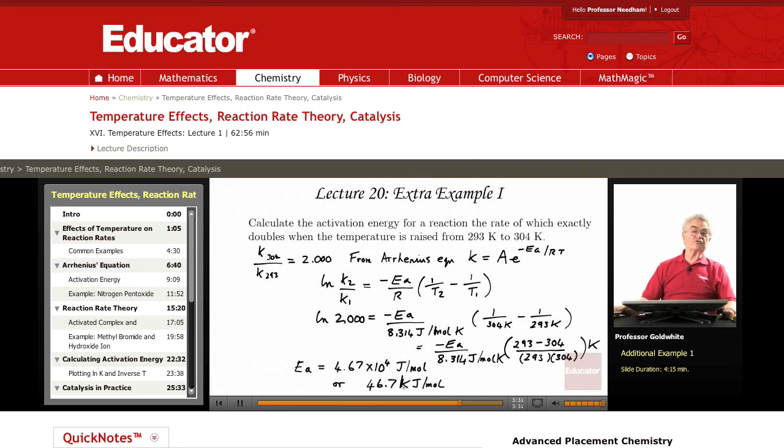There's an old rule of thumb in chemistry that says if you raise the temperature of a reaction by about 10 degrees around room temperature, its rate will about double. This is an illustration of that. You notice we've raised the temperature by 11 Ks, about 10 degrees, and we see that the activation energy of such a reaction, if it exactly doubles in rate, is about 50 KJs per mole.